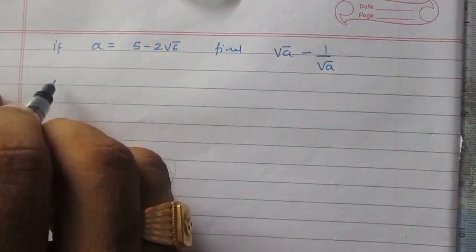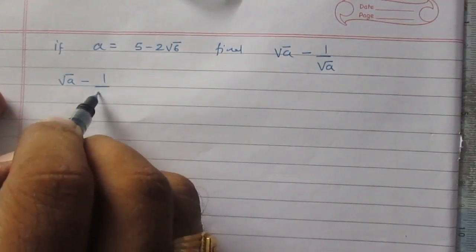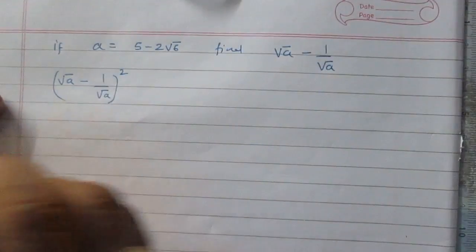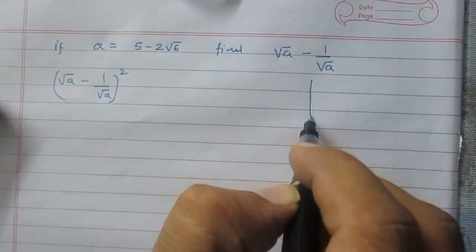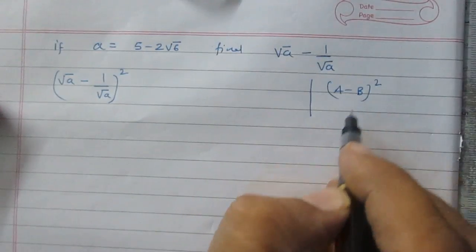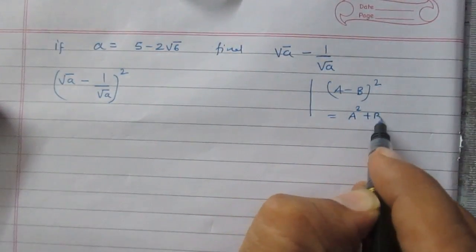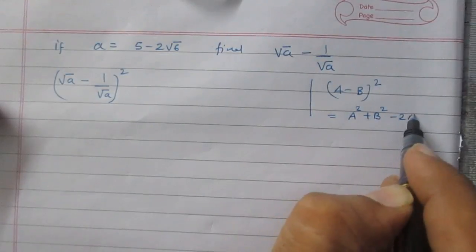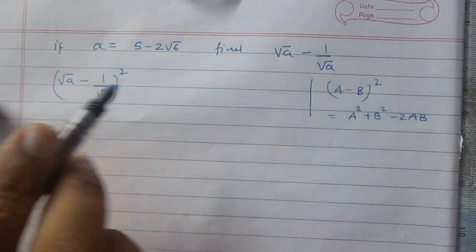Let us consider square root a minus 1 upon square root a, whole square. According to the identity, a minus b whole square is equal to a square plus b square minus twice of ab. We can use this identity here.